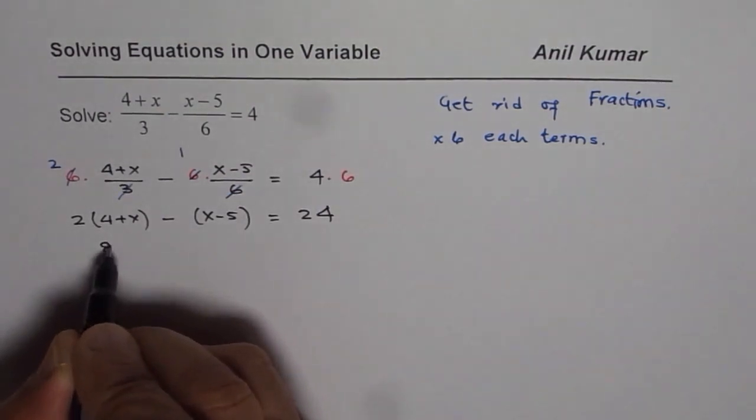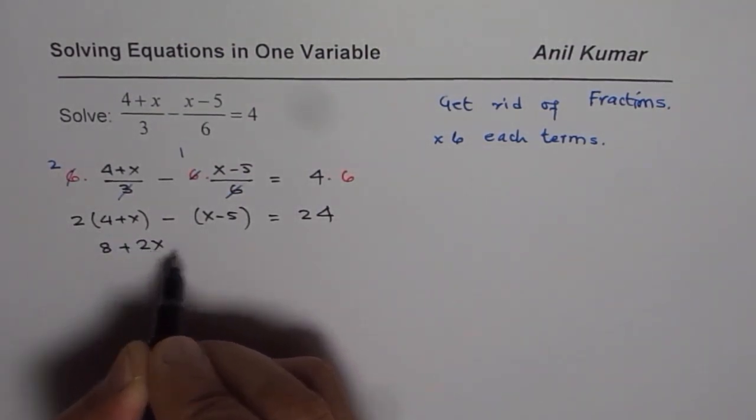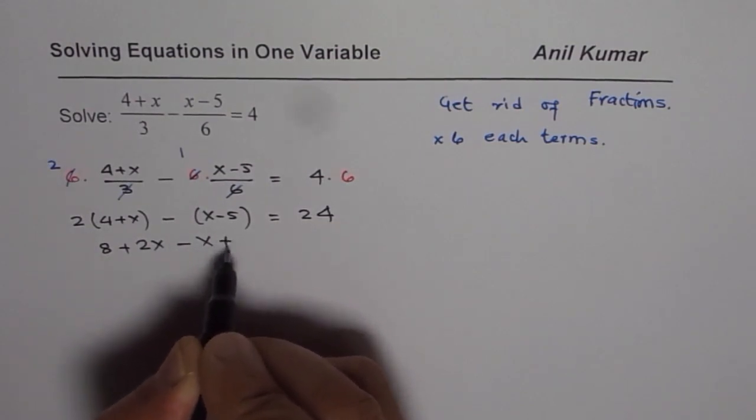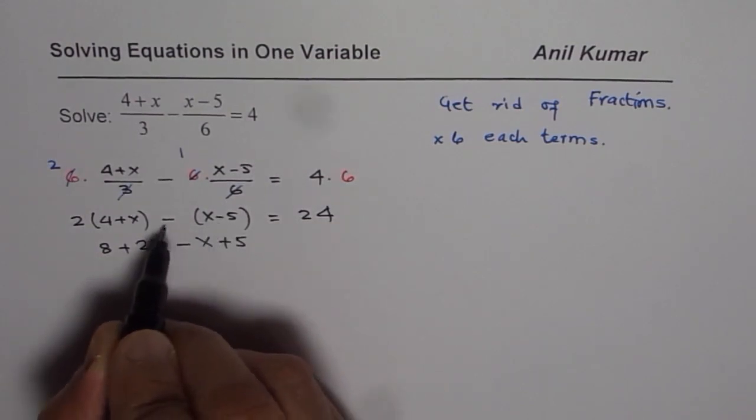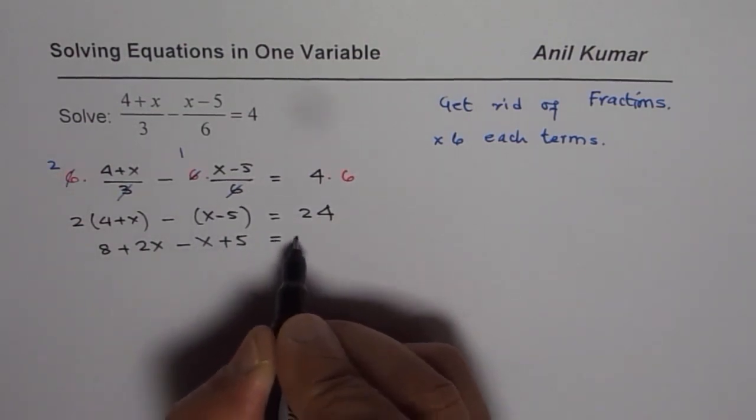Now open the brackets. You get 2 times 4 is 8, 2 times x is 2x, then minus x plus 5. Don't forget to change the sign because when minus gets multiplied with minus you get positive 5 in this case.